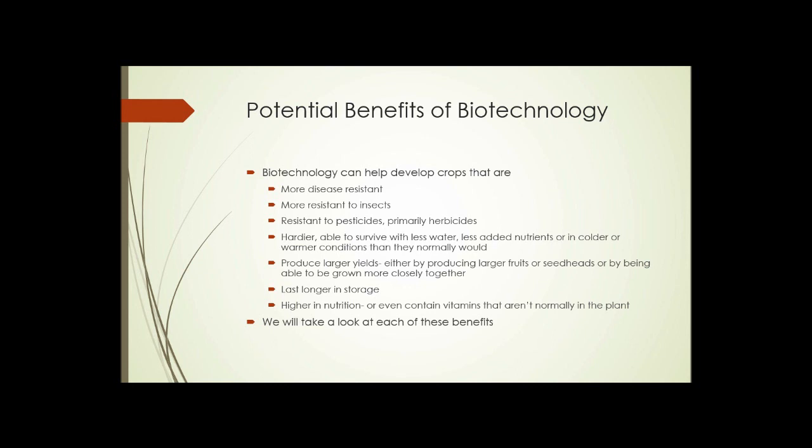Why do we do this at all? There are potential benefits of biotechnology. Biotechnology can help develop crops that are more disease resistant, more resistant to insects, resistant to pesticides — primarily herbicides — are hardier, able to survive with less water, fewer added nutrients, or in colder or warmer conditions than they normally would. It can produce larger yields by producing larger fruits or seed heads, or allowing plants to be grown more closely together. It can also produce crops that last longer in storage, or are higher in nutrition, or even contain vitamins that aren't normally available in that plant.